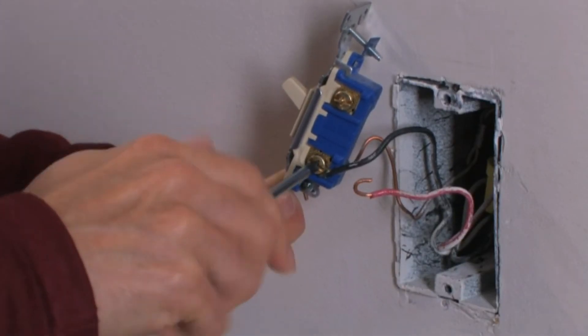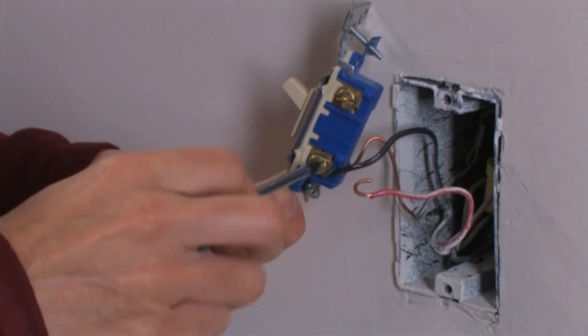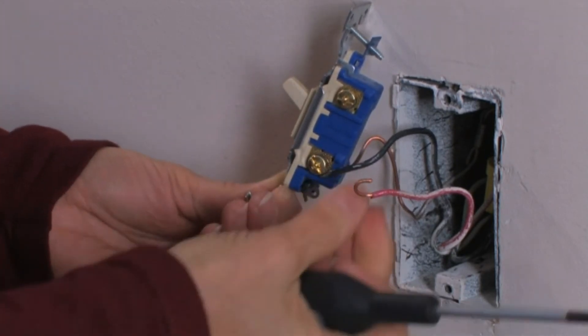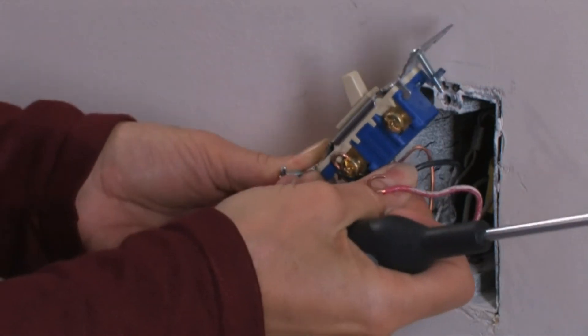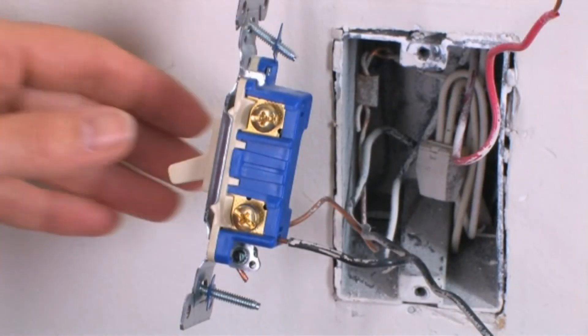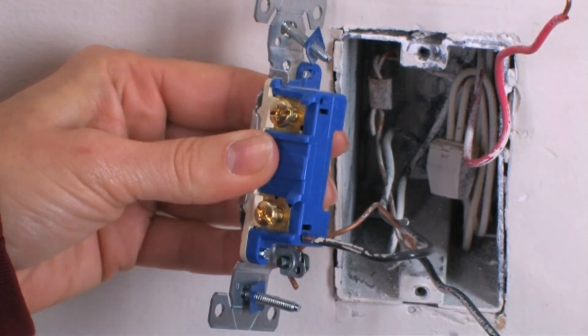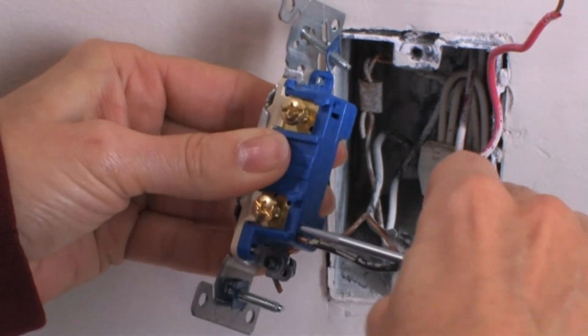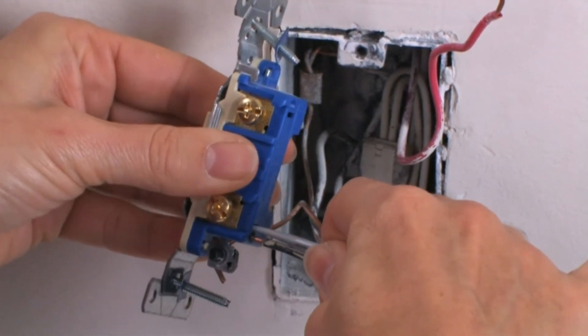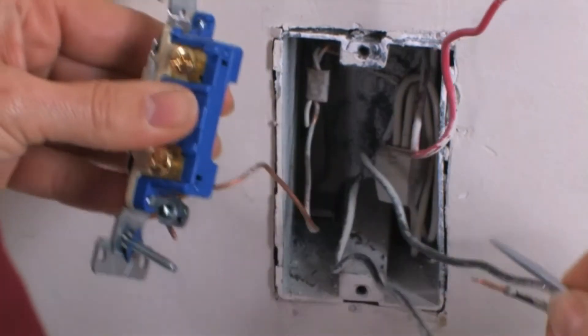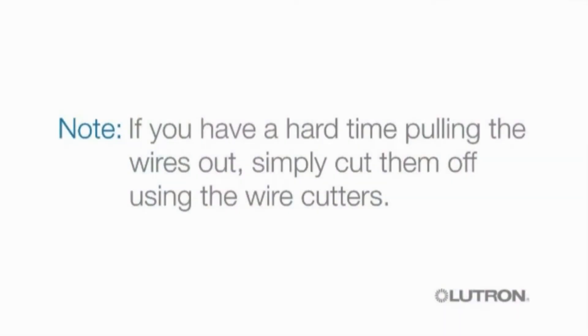If the wires are attached to screws, use your Phillips head screwdriver to loosen the screws and then remove the wires from the switch. If the wires are stabbed into the back of the switch, insert your flathead screwdriver into the space above and below each wire and pull the wire out. If you have a hard time pulling the wires out, simply cut them off using the wire cutters.